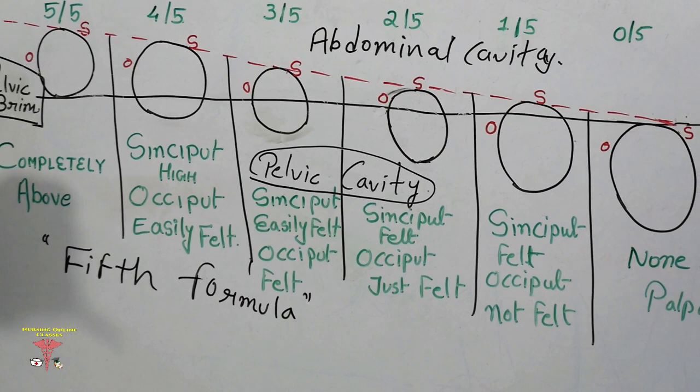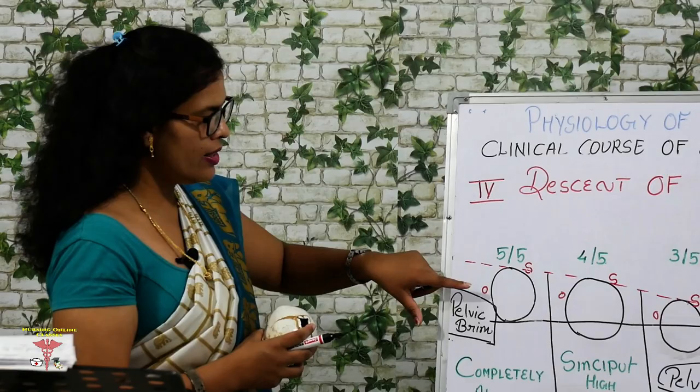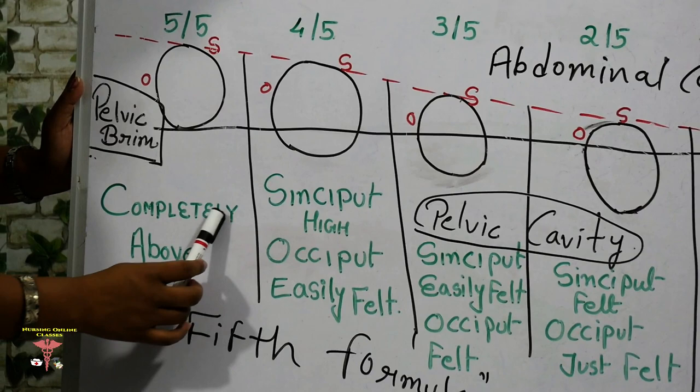At 5/5, the fetal head is at its attitude of increased flexion at the pelvic brim. The sinciput is above and the occiput is above — both the occiput and sinciput are completely above the pelvic brim.